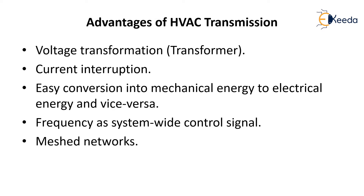Starting with the advantages of HVAC — high voltage AC transmission — the first advantage is the transformer. Voltage transformation is possible in HVAC transmission, which is not possible at all in HVDC transmission. With a transformer we can either step up or step down the voltage. As discussed previously, generated voltage is in the order of 11 kV or 33 kV, but during transmission we step it up to hundreds of kilovolts. The transformer is thus one of the most important advantages of HVAC transmission.